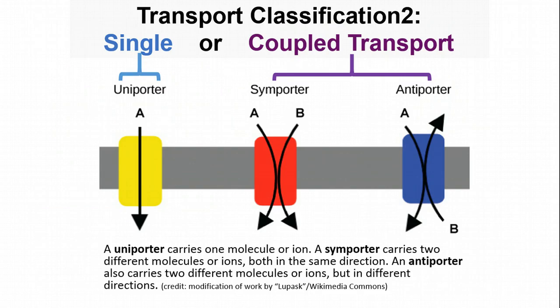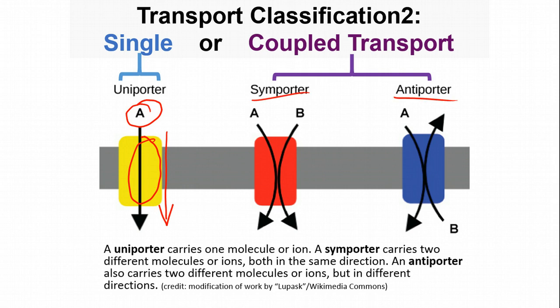The second classification for transporters is single or coupled transport. A uniporter moves one ion or molecule at a time across the cell membrane. Coupled transport involves the movement of more than one molecule. There are two types: a symporter moves molecules A and B in the same direction across the cell, and an antiporter moves the molecules in opposite directions — A going in and B going out.